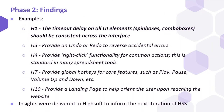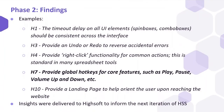A few examples included violations of heuristic 1, visibility of system status. Based on feedback, we concluded that the timeout delay on all UI elements, including spin boxes and combo boxes, should be consistent across the interface, as users have expectations regarding interface usability that ought to be consistent across the HSS. Another example was the inclusion of global hotkeys or shortcuts for core features such as play, pause, volume up and down, and more. Participants often referred to YouTube as a canonical ground truth for a media interface with global media hotkeys.